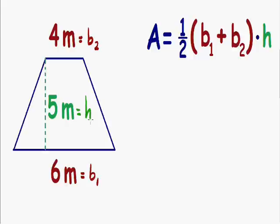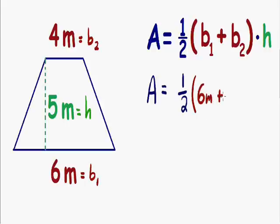Now that we've labeled everything, we can plug everything into our formula. Our area is going to be equal to one-half multiplied by B1 plus B2. Our B1 is six meters, and our B2 is four meters. This is all multiplied by our height, which we know is equal to five meters.